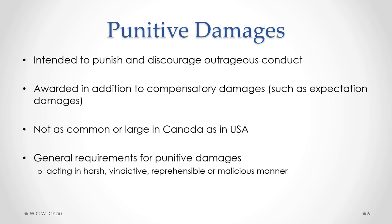The general requirements a court looks at to determine the availability of punitive damages is that the breaching party had to have acted in a harsh, vindictive, reprehensible, or malicious manner. Simply breaching a contract is not enough to warrant punitive damages — the behavior has to be much worse than that.